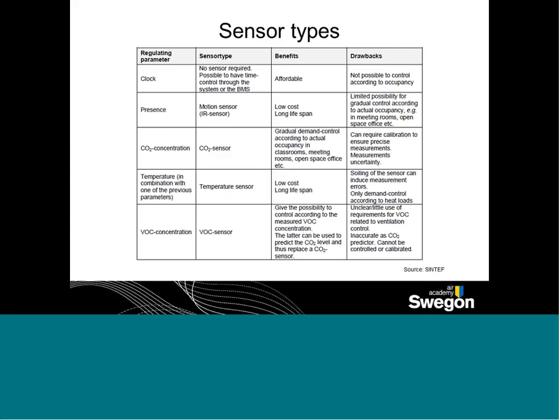I don't want to go through this in great detail, but I wanted to put it in the presentation so you could look at it later. I think it's very interesting because you need to have some sort of sensor in the occupied zone. This is a list of sensor types and the benefits and drawbacks of each one — clocks and alternative sensors, CO2 concentration, VOC, and temperature. I'll leave that there just for you to look over afterwards.